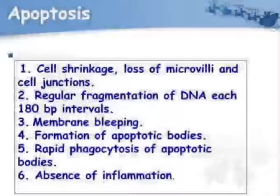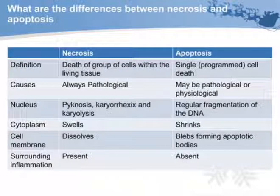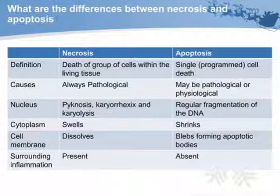Features of apoptosis: cell shrinkage, loss of microvilli and cell junctions, regular fragmentation of DNA at 180 bp intervals, membrane blebbing, and formation of apoptotic bodies. Rapid phagocytosis of apoptotic bodies occurs in the absence of inflammation. Differences between necrosis and apoptosis: necrosis affects a group of cells; apoptosis is single programmed cell death. Necrosis is pathological; apoptosis is pathological and physiological. Necrosis causes karyorrhexis, karyolysis, and pyknosis; apoptosis causes regular DNA fragmentation. The cell swells in necrosis and shrinks in apoptosis. The cell membrane dissolves in necrosis; blebs form apoptotic bodies in apoptosis. Surrounding inflammation is present in necrosis but absent in apoptosis.